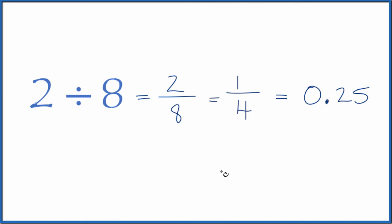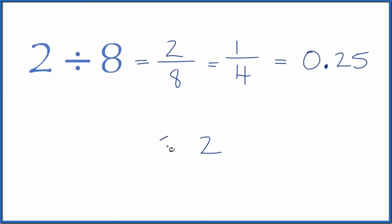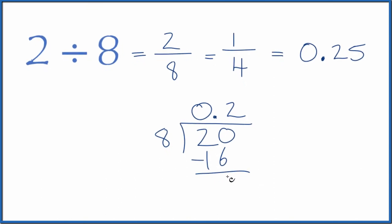We could do this longhand as well. We could take 2 and see how many times 8 goes into 2. It doesn't go into 2. Let's call it 20. Then we could put a 0 with a point up here. So 2 times 8 is 16. We subtract and get 4.